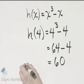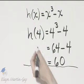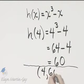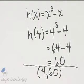By the way, don't forget the corresponding ordered pair. When x is 4, h of 4 or y is 60. The ordered pair is 4 comma 60, but it is true that h of 4 is 60.